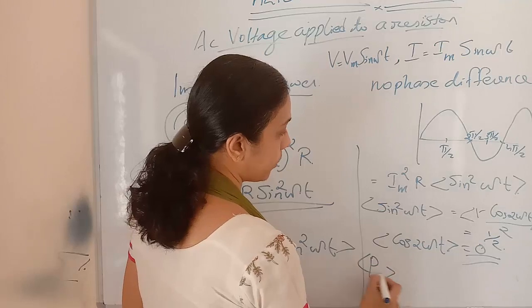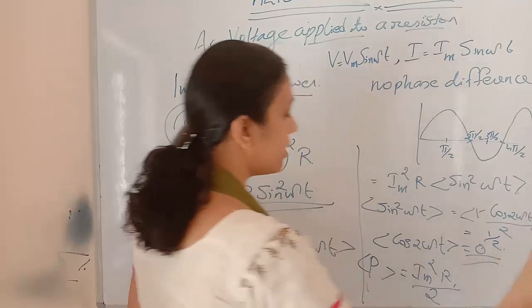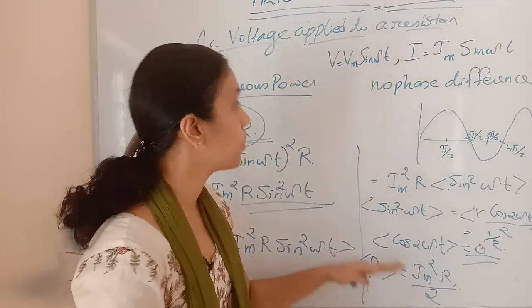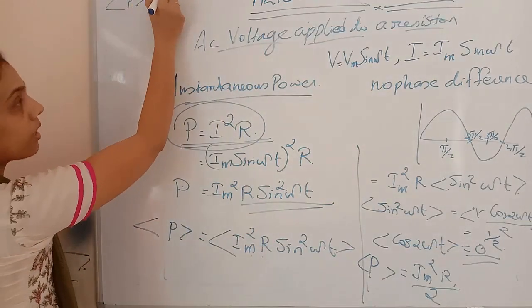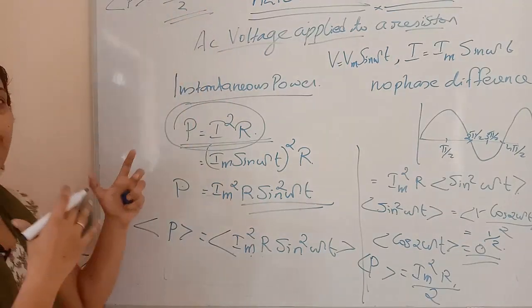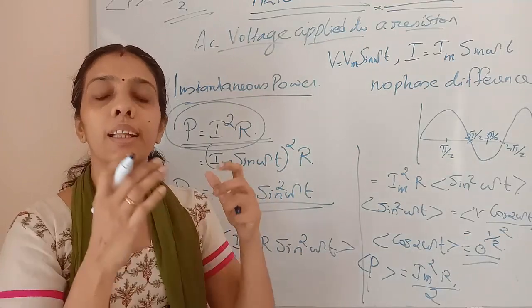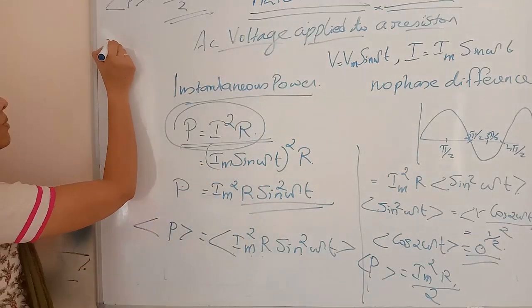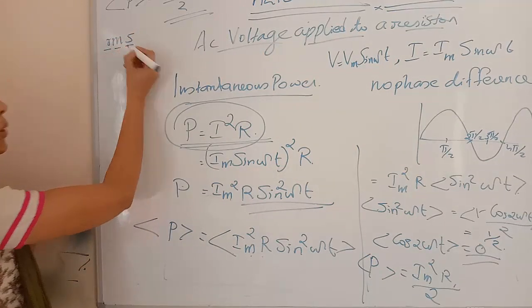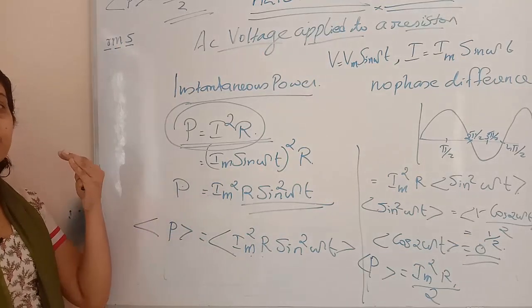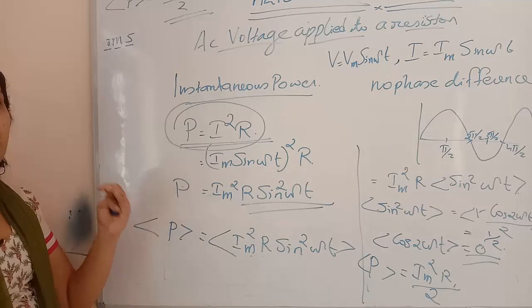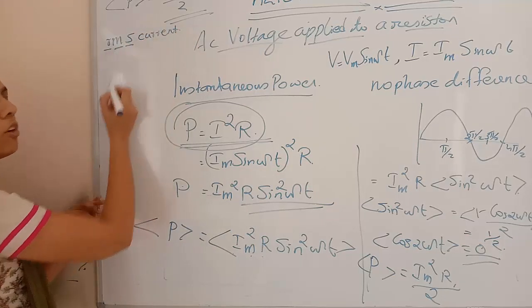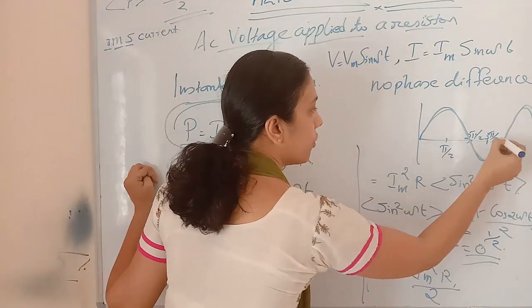To represent this in a uniform way similar to DC, we use the RMS value — root mean square value. For current and voltage we can represent them as RMS values. The RMS value of current is found by squaring the current, taking the mean, and then taking the square root.